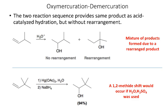If I had this as my starting material and tried to use acid-catalyzed hydration, I would get a mixture of two products. We form a secondary carbocation; if the water attacks there I get one product, but if I have a methyl or hydride shift I can move the carbocation and get a different product. However, if instead I use oxy-mercuration-demercuration, I only get the product without any rearrangement.